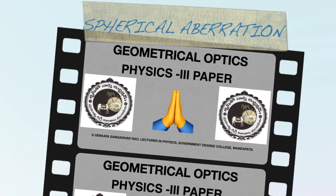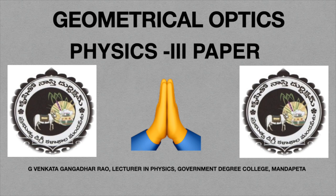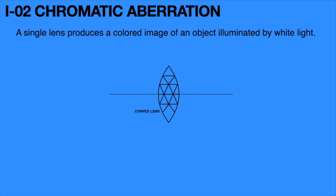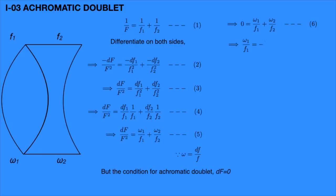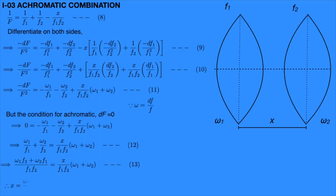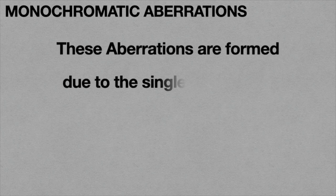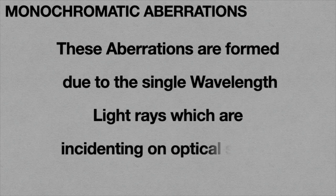Hello everyone. Welcome to topic number 4. In the last classes, we discussed about chromatic aberrations and methods for their elimination or minimization. Now, we will discuss about monochromatic aberrations — that means aberrations which are formed due to single wavelength light rays incident on an optical system.